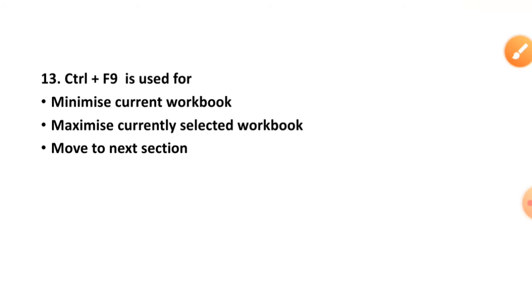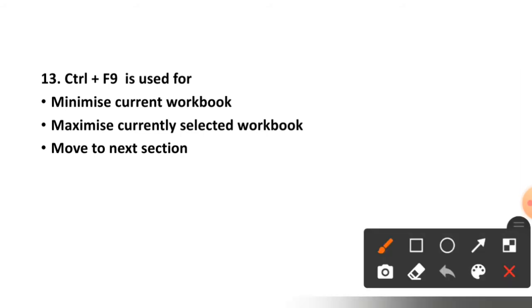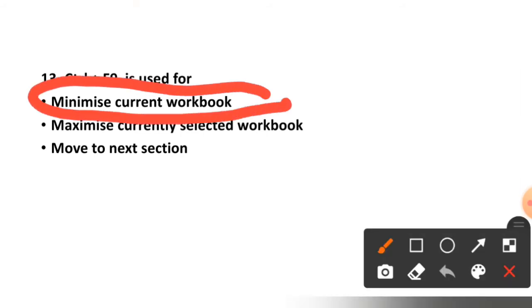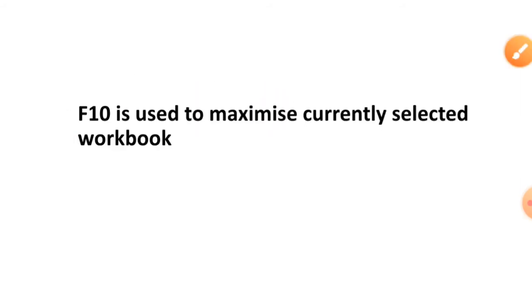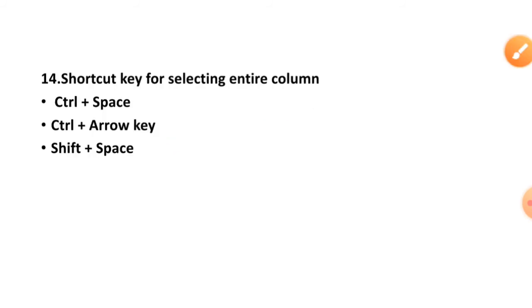Question number thirteen: Control plus F9 is used for what? Minimize current workbook, maximize currently selected workbook, or move to the next section? The correct option is option number one, minimize. And F10 is used to maximize the currently selected workbook.